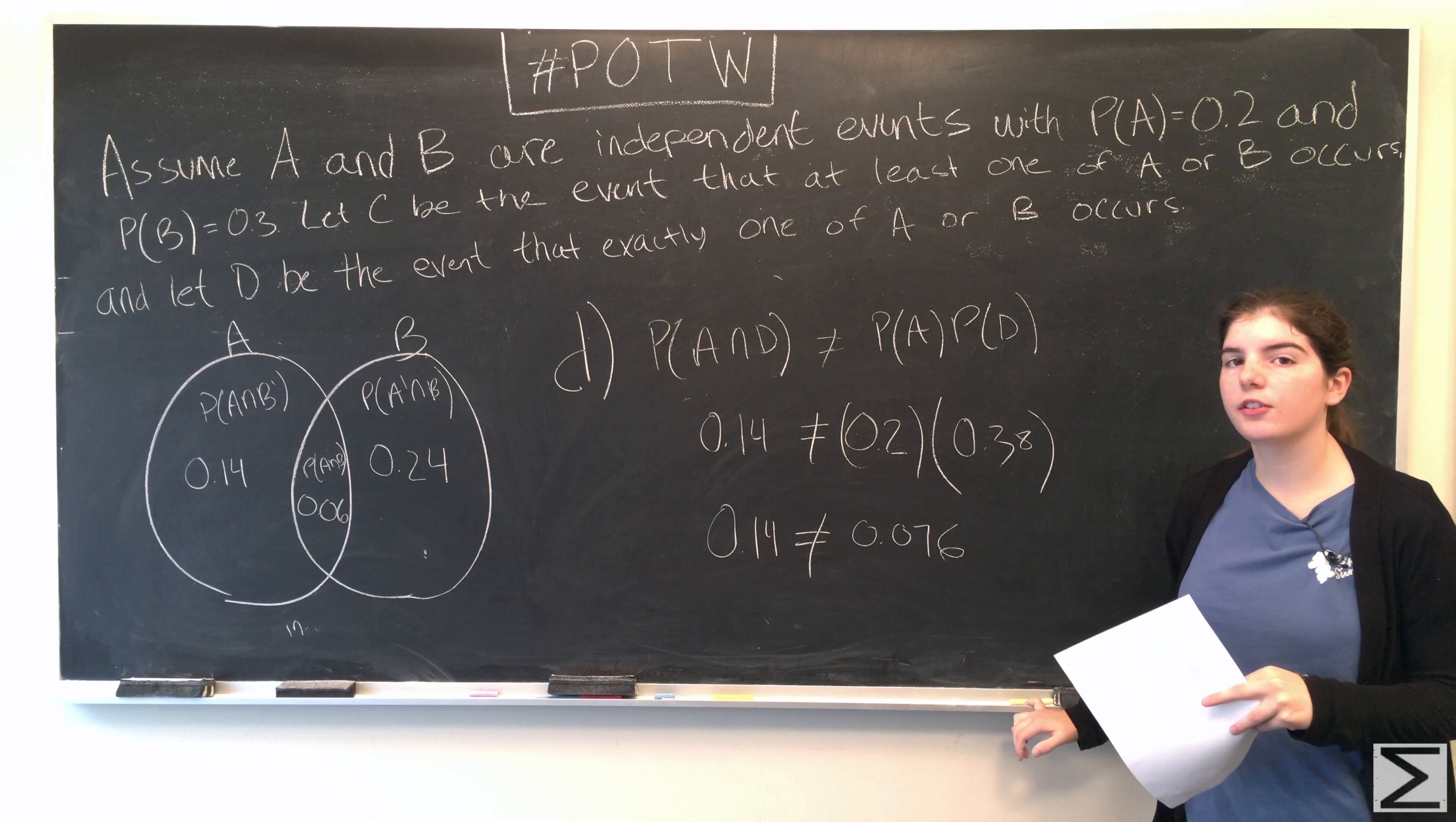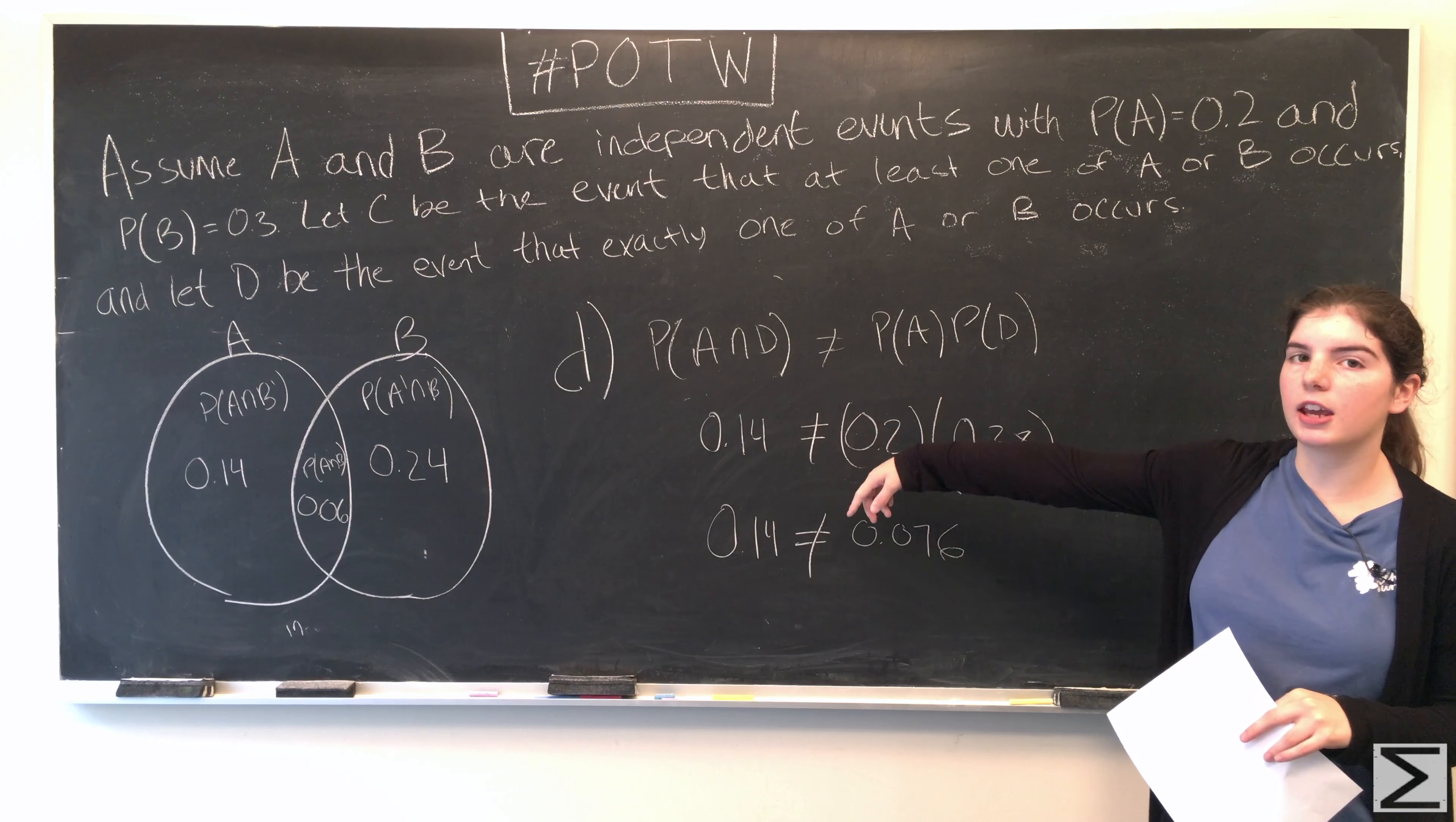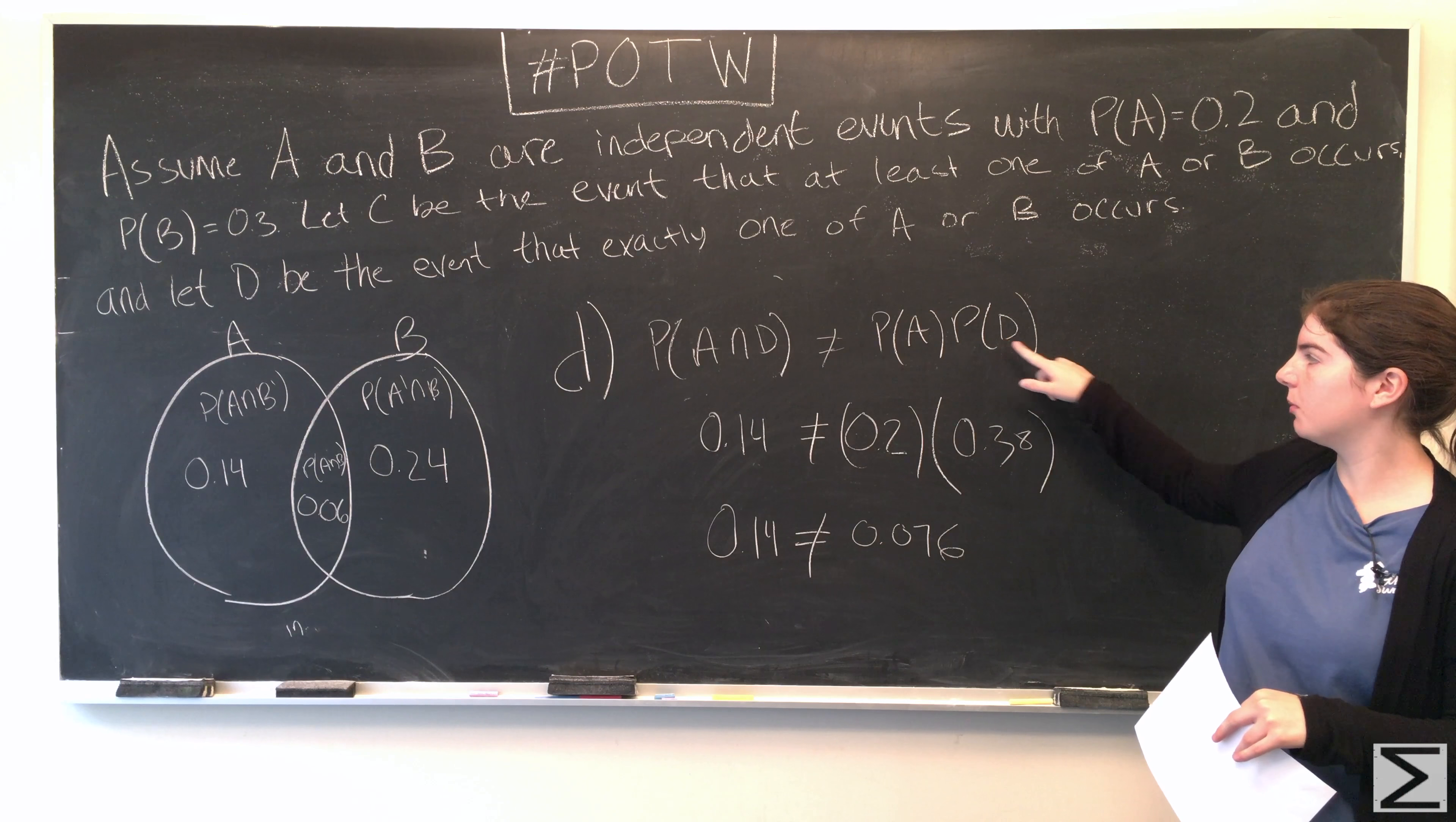So to check if two events are independent, you have to see if the probability of their intersection is equal to the product of their individual probabilities. And if that doesn't hold, then they're not independent. So the probability of the intersection of A and D, we determined that it was the same as the probability that A occurs but B doesn't, so it's 0.14. And then we have the probability of A is given and we found the probability of D. And they don't equal each other, so the two events are not independent.